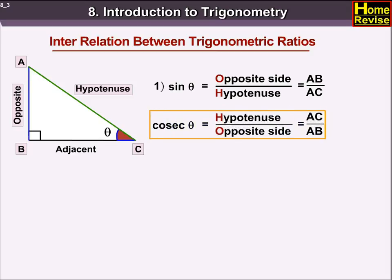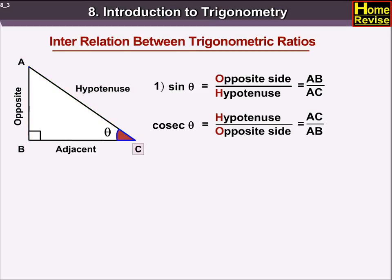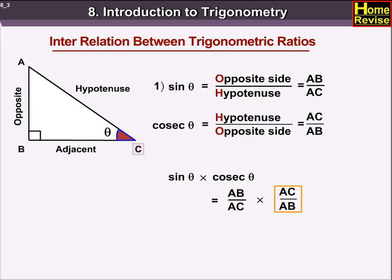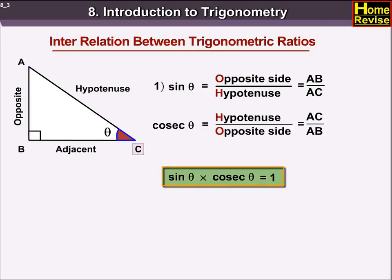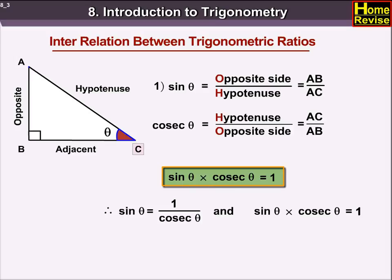Cosec theta is equal to hypotenuse upon opposite side, that equals AC upon AB. Now, sin theta into cosec theta is equal to AB upon AC into AC upon AB, which equals 1. Therefore, sin theta into cosec theta is equal to 1. So we can get sin theta is equal to 1 upon cosec theta, and cosec theta is equal to 1 upon sin theta.